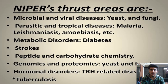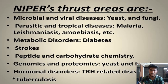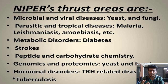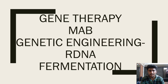When we talk about NIPER thrust areas — areas where there are many hot questions — you can expect questions on tuberculosis, leishmaniasis, malaria, and infectious diseases in general. Next, omics: genomics, proteomics, then software and peptide chemistry, carbohydrate chemistry, and metabolic disorders like diabetes. These are the thrust areas.